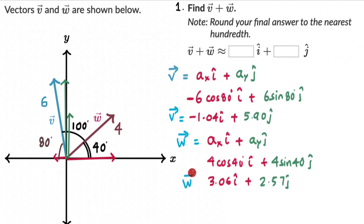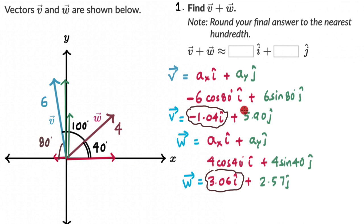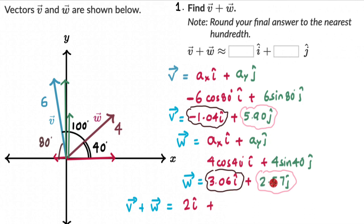Now we add the i-components together and the j-components together. Vector v + vector w = (−1.04 + 3.06) î + (5.90 + 2.57) ĵ = 2 î + 8.47 ĵ. So v + w = 2 î + 8.47 ĵ. That completes part one.